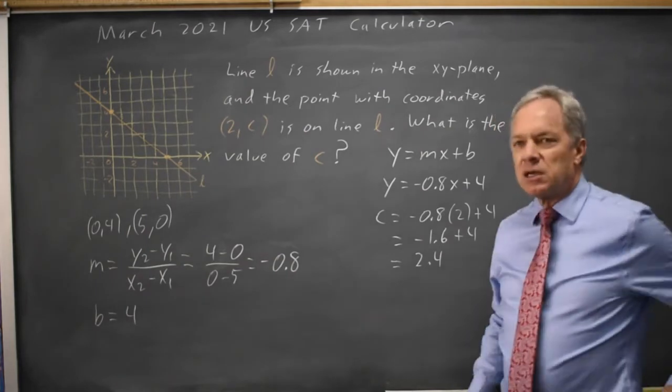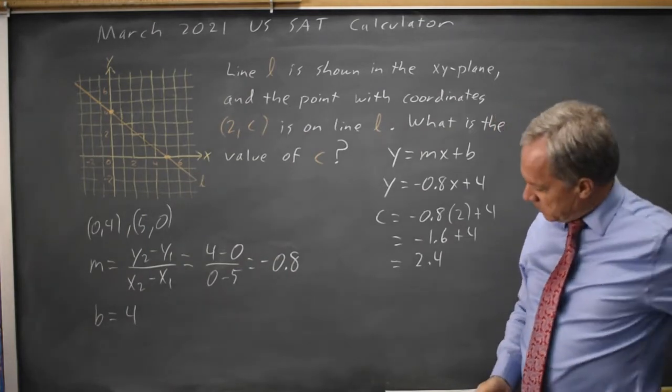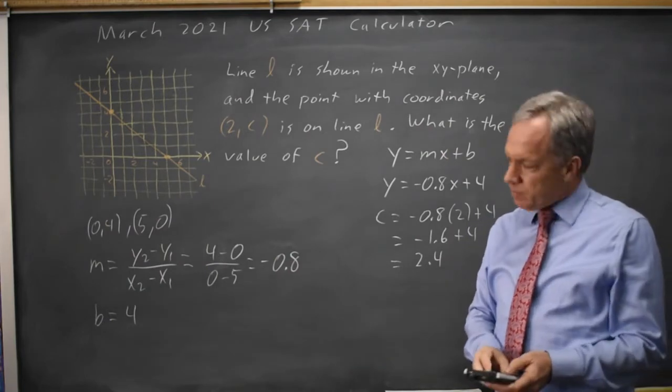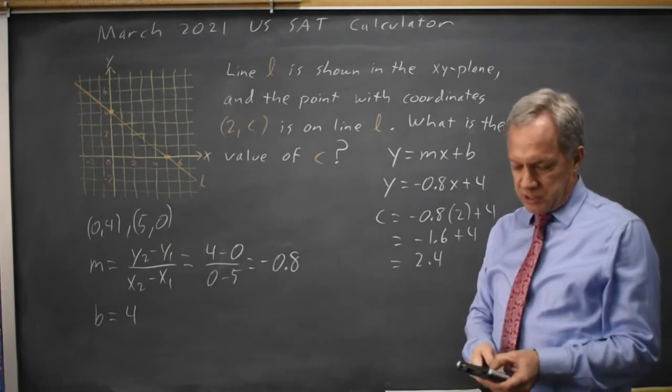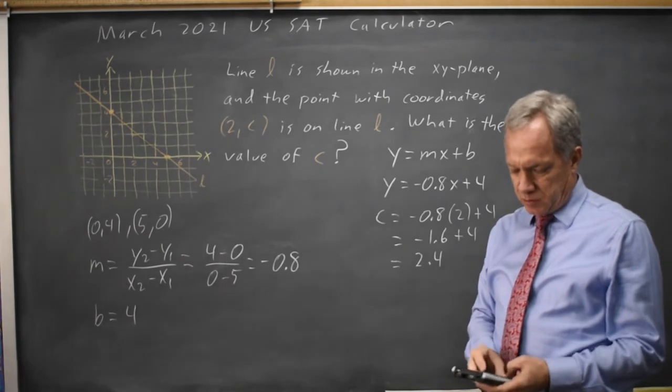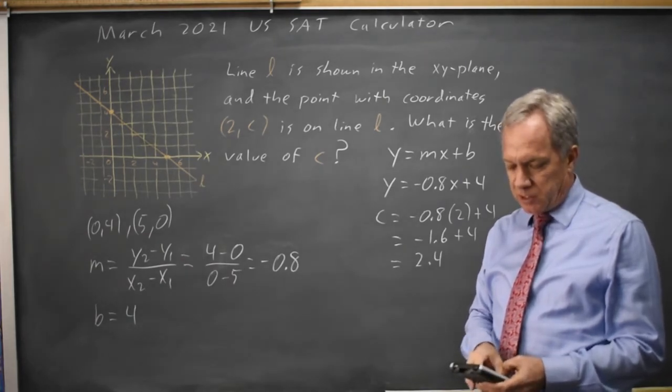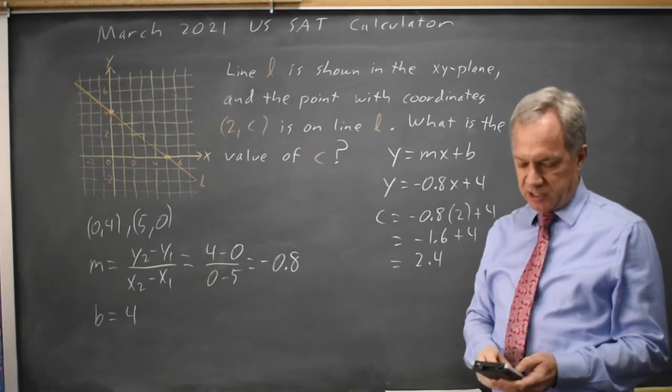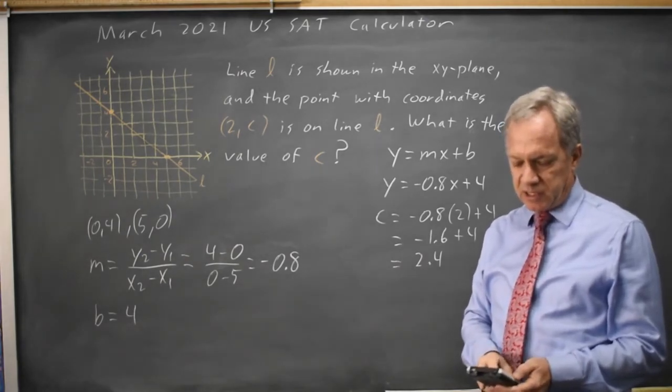Alternatively, I can use my graphing calculator and put these points into stat edit with x values of 0 and 5 in list 1 and y values of 4 and 0 in that order for list 2 and say stat calculate linear regression on my TI-83 or 84.